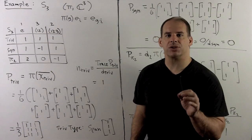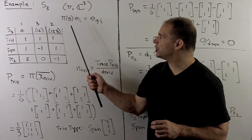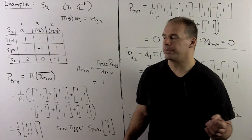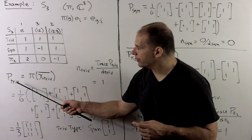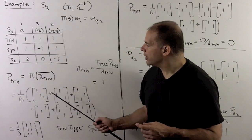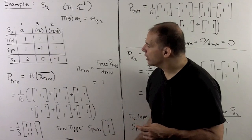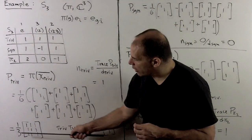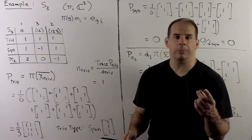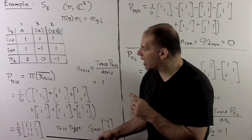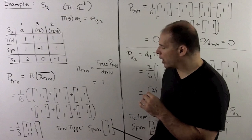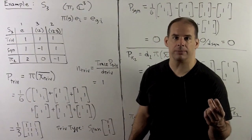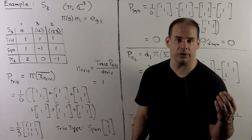For a concrete example, consider the usual action of S3 on C3, where the action is by permutation on the standard basis vectors. We see that this representation has a trivial type and an irreducible type of dimension two. Writing down the character table and computing the projection operators: for the trivial type, the dimension equals one and the character values are all one, so we take the sum of the three-by-three permutation matrices and divide by the order of the group. That gives one-third times a matrix consisting entirely of ones. The trivial types are spanned by the vector (1,1,1). Taking the trace of the projection operator and dividing by the dimension: the trace equals one, dimension equals one, so the multiplicity of the trivial type is one.